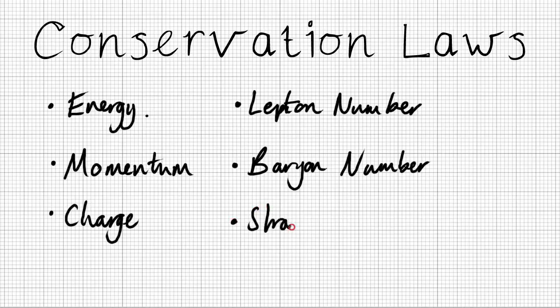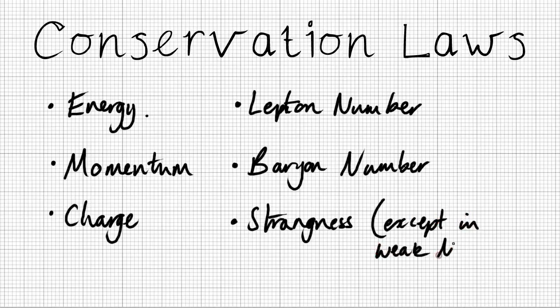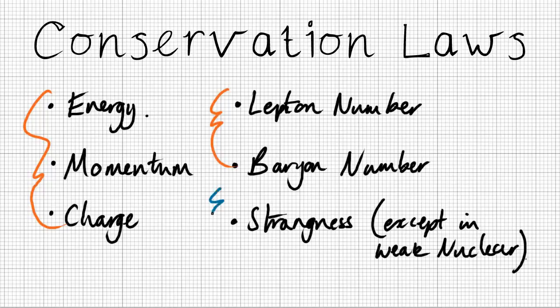And lastly, strangeness is conserved. So how many strange particles there are is conserved. And this is except in weak nuclear, when actually you can get a strange being created or destroyed. So these are the five ones that you need to apply to every reaction. And this strange one is every one except for weak nuclear.